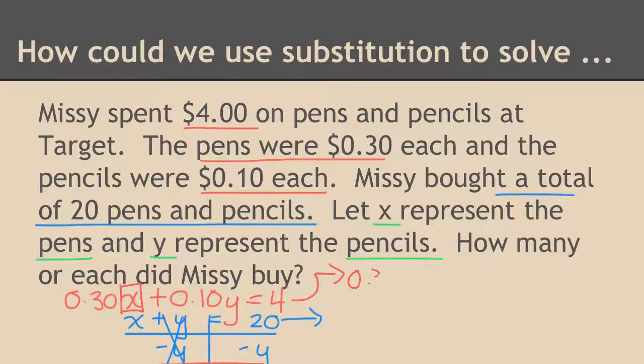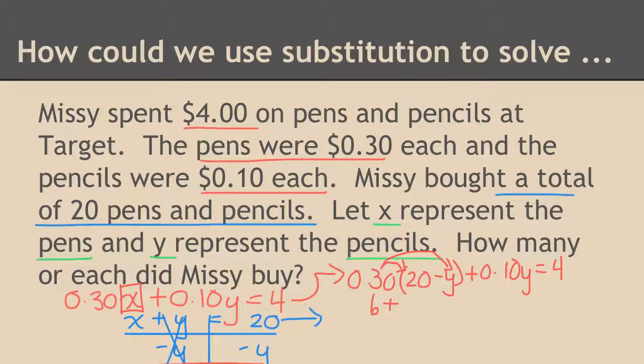So I have $0.30 times x, but instead of x, I'm going to substitute plus $0.10 times y equals 4. So we're going to do some distribution again. We're using all those skills from earlier in the year. So $0.30 times 20 is going to be 6. And $0.30 times negative y is negative $0.30 y. And then I just have the rest of the equation equals 4.